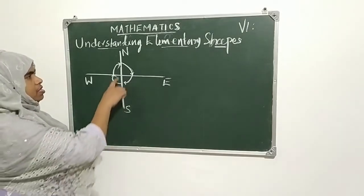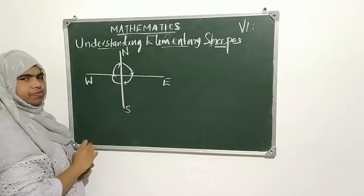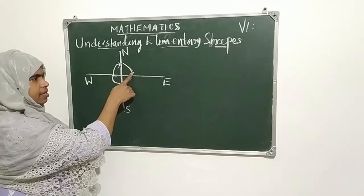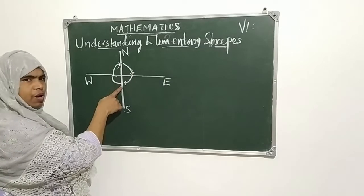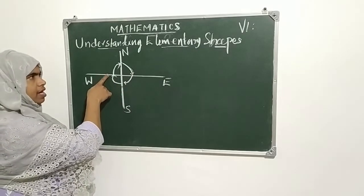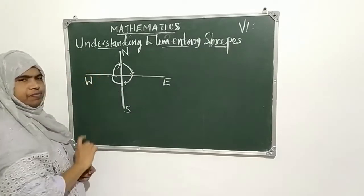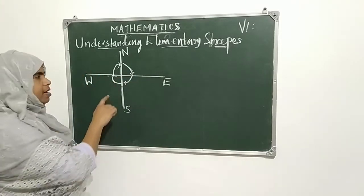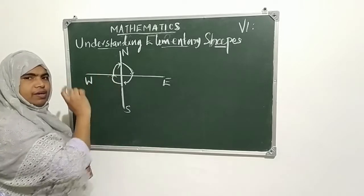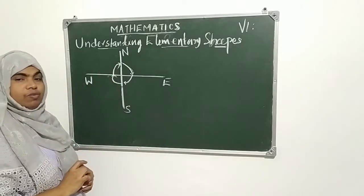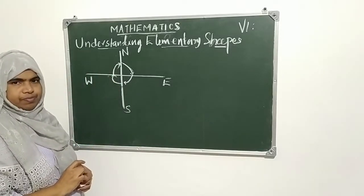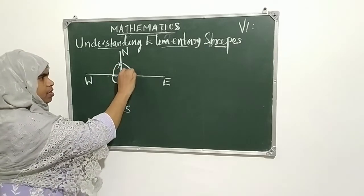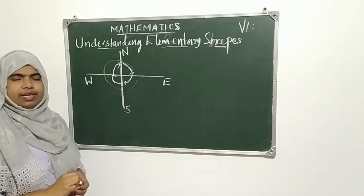Once more: starting from north, then east, then south, then west, and at last back to north. This completed one round — one revolution. One revolution is one complete round, and this is 360 degrees.